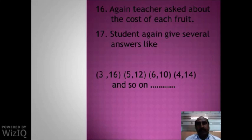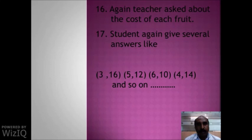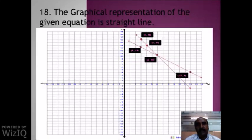Students gave several answers again — for example, Rs. 3 as the cost of mango and Rs. 16 as the cost of apple. If Rs. 3 is the cost of a mango, then for 2 mangoes that is Rs. 6, and 6 plus 16 equals 22. The teacher asked to plot these points on graph paper. On the same paper, a second straight line appeared, and these two lines intersect at one point. The coordinates of that intersection point are the answer to the question.